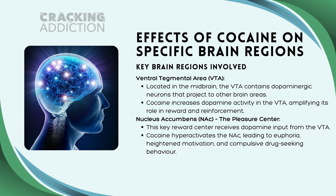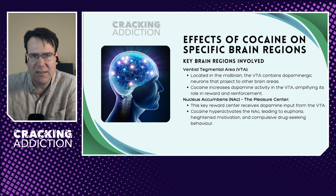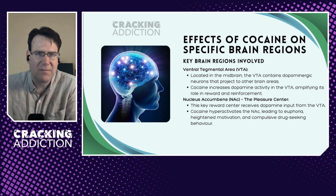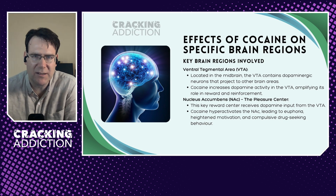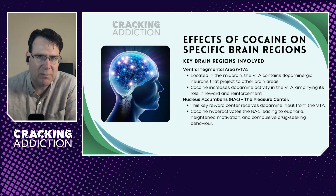The main system here is the mesolimbic dopamine system. The key brain area is the ventral tegmental area, or VTA, located in the midbrain. The VTA contains dopaminergic neurons that project to other brain sites. Cocaine increases dopamine activity in the VTA, amplifying its role in reward and reinforcement. The next region is the nucleus accumbens, or NAc — the pleasure center — which is the key reward center that receives dopaminergic input from the VTA.